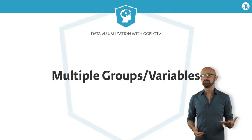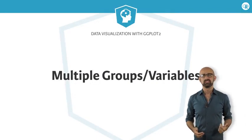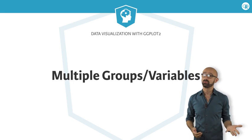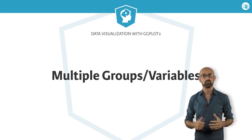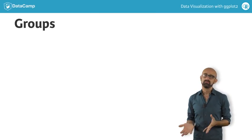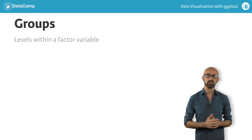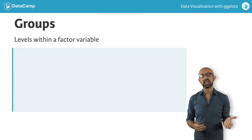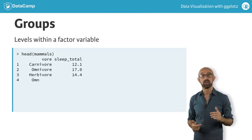To wrap up our discussion of statistical plots, let's see how we can use them when comparing multiple groups or variables. Let's begin with groups, by which I mean levels within a factor variable — in this case, the eating habits of different mammals.